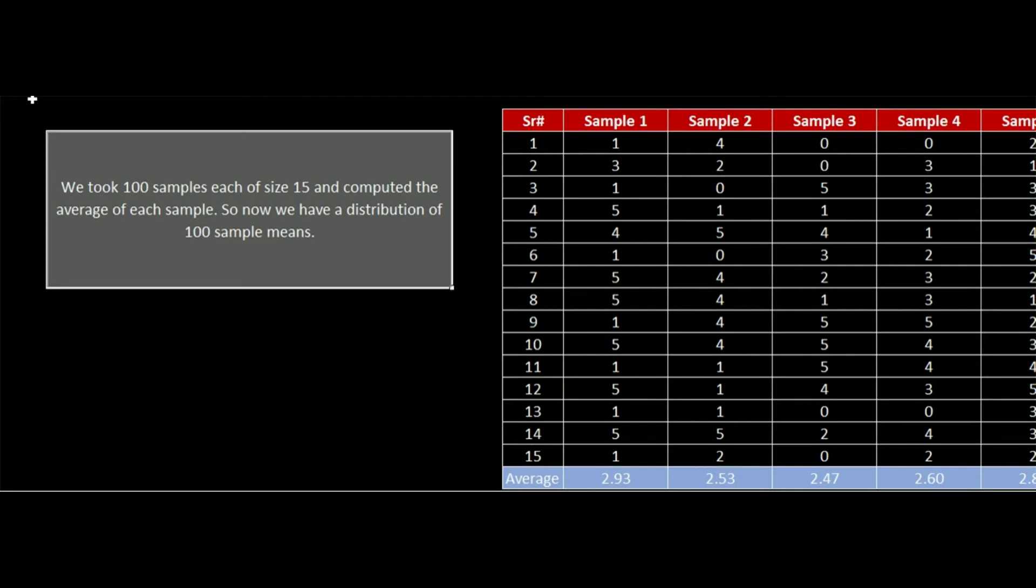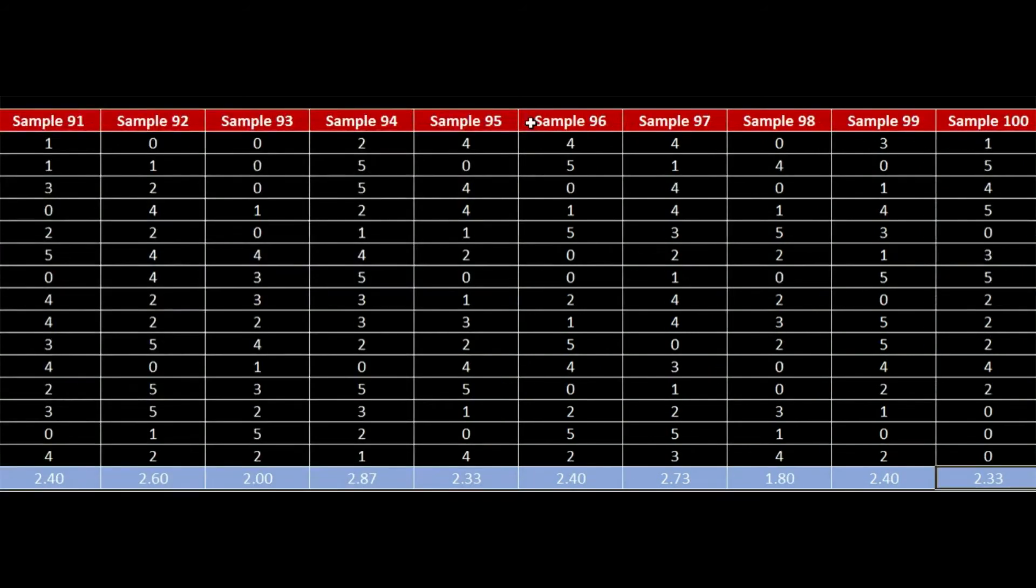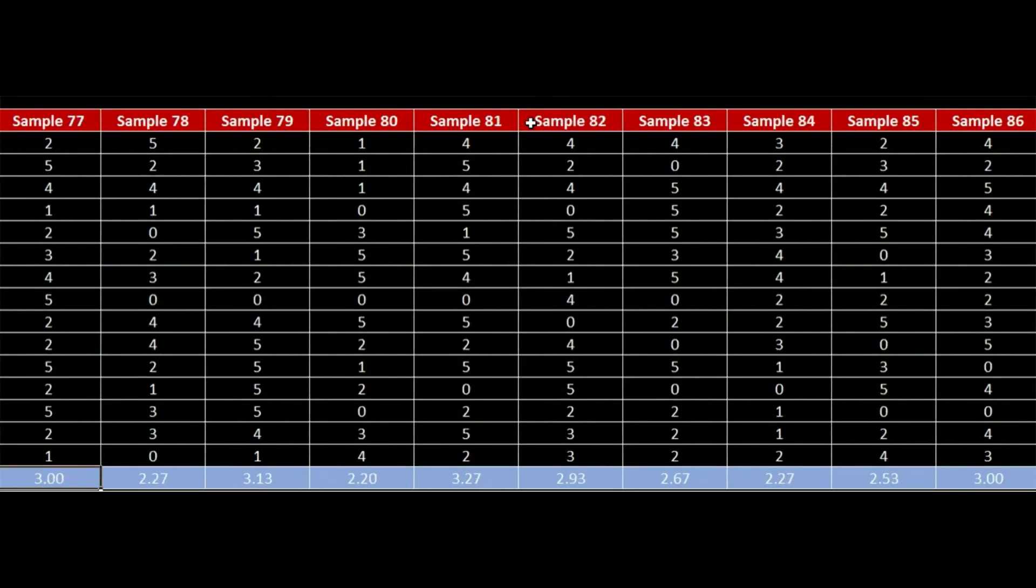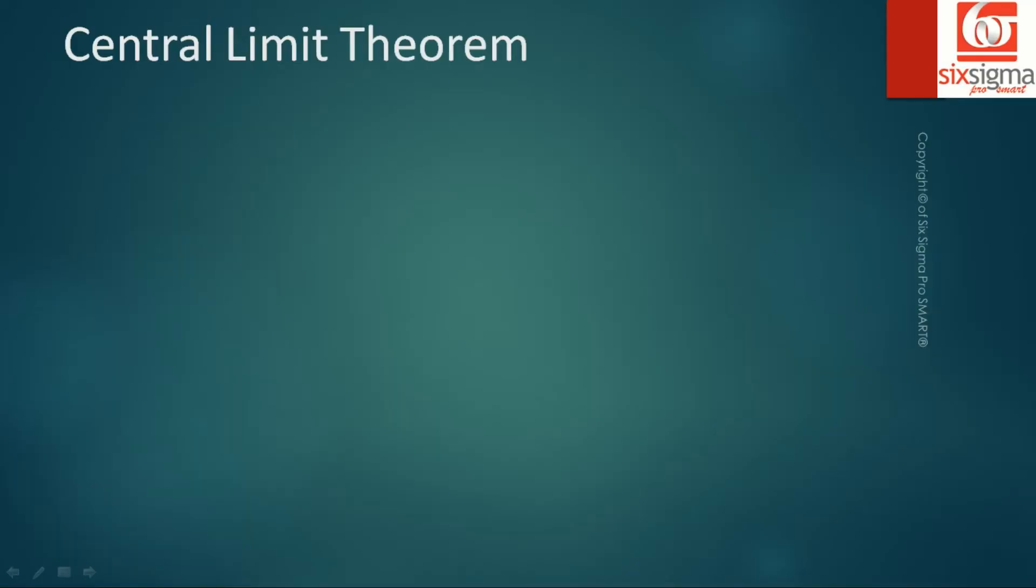Now we further extend that experiment. We've created a population of 10,000 observations by tossing coins and counting the number of heads. Now what we're going to do is from the population of 10,000, we are going to take samples one by one, and we are going to take each sample of sample size 15. So we'll take 15 observations from the population of 10,000 at a time and call it sample 1. Then again we'll go back and take another 15 observations and call it sample 2. So we took hundreds of samples, each of size 15, and computed the average of each sample. So now we have a distribution of hundred samples. The serial number here represents the number of observations in a sample, and we've taken hundreds of samples. And lastly, what we have done is for each sample we have computed the average.